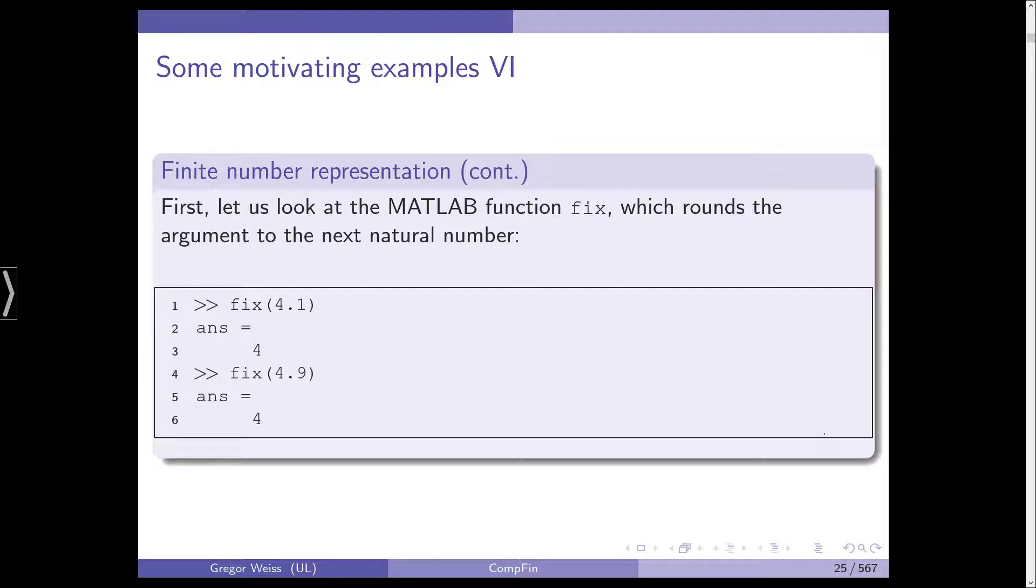Let's have a look at the MATLAB function fix, which rounds the argument to the next natural number down. Answer for fix 4.1 is 4. Fix of 4.9, again, 4. We are rounding down.